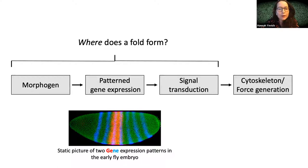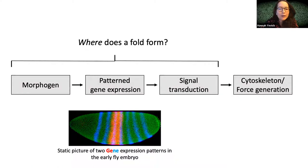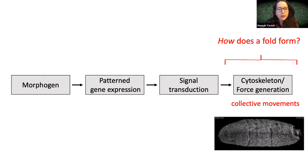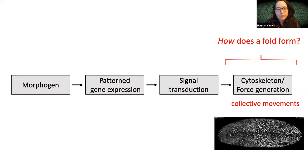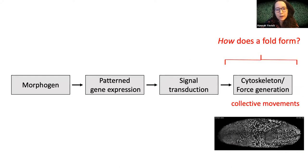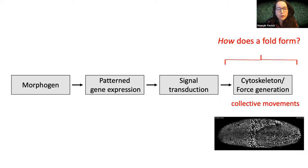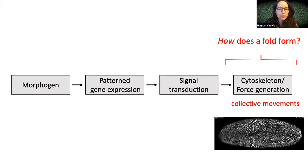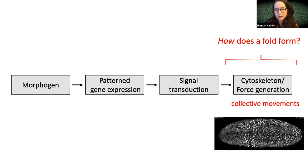While this answers where a fold forms, this picture really only delivers static snapshots of where cells are getting specific spatial cues through morphogens and patterned gene expression. A gap in our understanding — and a place where I think physics is providing a lot of contributions to developmental biology — is how we go from these precise patterns of gene expression to global movements and deformations needed to build shape in developing tissue. I'm particularly interested in how folds form through collective movements inside tissues.